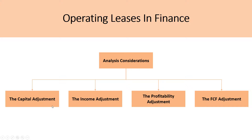In part two, we talked about the capital adjustment, which is discounting the future lease payments back to the present and then considering that an equivalent to debt. The income adjustment adjusts our operating income — our EBIT — and adds back imputed interest expense. It also adjusts our net income by adding back our rental expense and then subtracting depreciation and imputed interest. The profitability adjustment talks about the return on capital and other metrics, and how those adjustments relate to the income adjustments. The final is the free cash flow adjustment: if the present value of the operating lease increases from one year to the next, that difference is reported as additional capital expenditures, which impacts your free cash flow calculation.